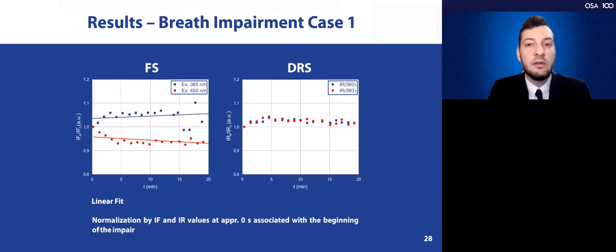Here are the results, one of the examples of the breath impairment case. Here we can see that the excitation slowly grows in the wavelengths of 365 nanometers. Meanwhile, it descends for the excitation of 450 nanometers. And especially for the first five minutes, we see how acutely it grows. Meanwhile, for the diffuse reflectance spectra, we see a little bit of growth in the first five minutes and then it was stable.